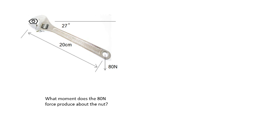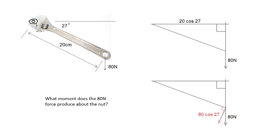What moment does the 80 newton force produce about this nut? There are two ways of thinking about it. We can think about it in terms of 80 newtons times the perpendicular distance — you could sketch a little triangle and realize that the perpendicular distance is 20 cos 27. The way I would do it is split the 80 newton force into components and consider the component perpendicular to the distance, which is 80 cos 27. So the moment will be 80 cos 27 times 0.2.